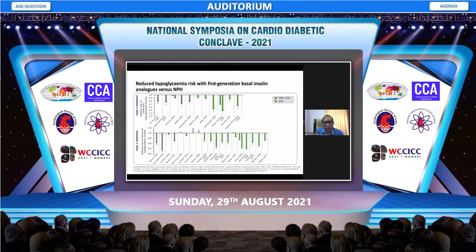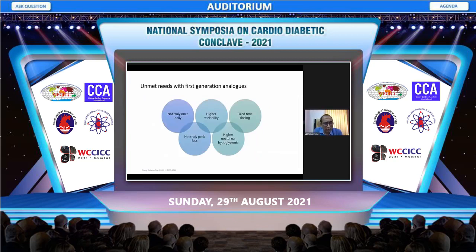In type 2 diabetes the reduction in nocturnal hypoglycemia was 20 to 53%, and in type 1 diabetes it was 20 to 46% compared to NPH. However, the unmet needs of first generation analogs included some residual variability, the requirement for fixed-time dosing since glargine has a 24-hour action, higher nocturnal hypoglycemia rates than desired, and occasional peaking in some individuals.